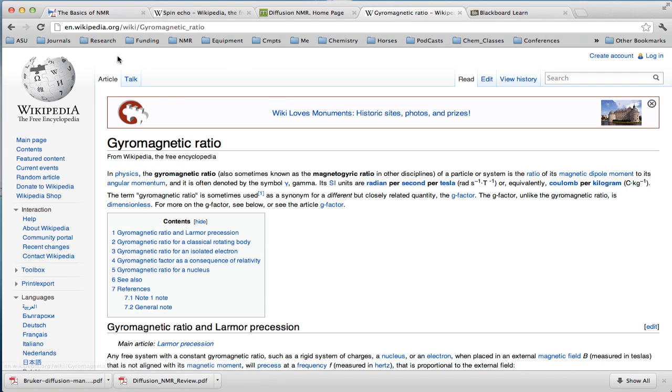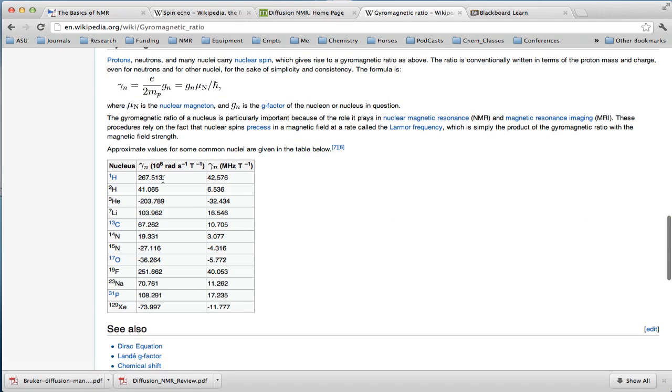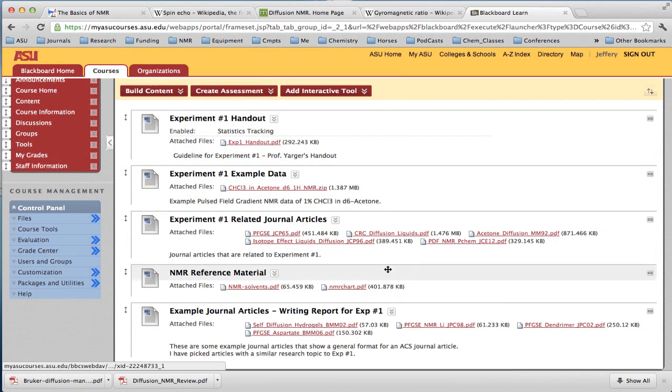The gyromagnetic ratio, if you do a search again, there's a good Wikipedia page that gives the value, in this case we typically use proton, and the values are given here. Finally, if you're in my class, I've provided a lot of handout information that better describes this. I hope this helps give you a basic introduction to Pulse Field Gradient Spin Echo NMR. Thank you.